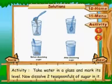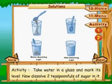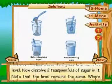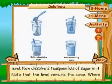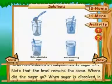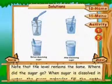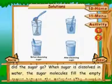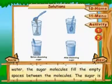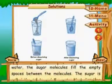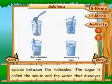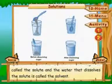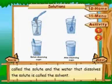Activity: Take water in a glass and mark its level. Now dissolve two teaspoonfuls of sugar in it. Note that the level remains the same. Where did the sugar go? When sugar is dissolved in water, the sugar molecules fill the empty spaces between the water molecules. The sugar is called the solute, and the water that dissolves the solute is called the solvent.